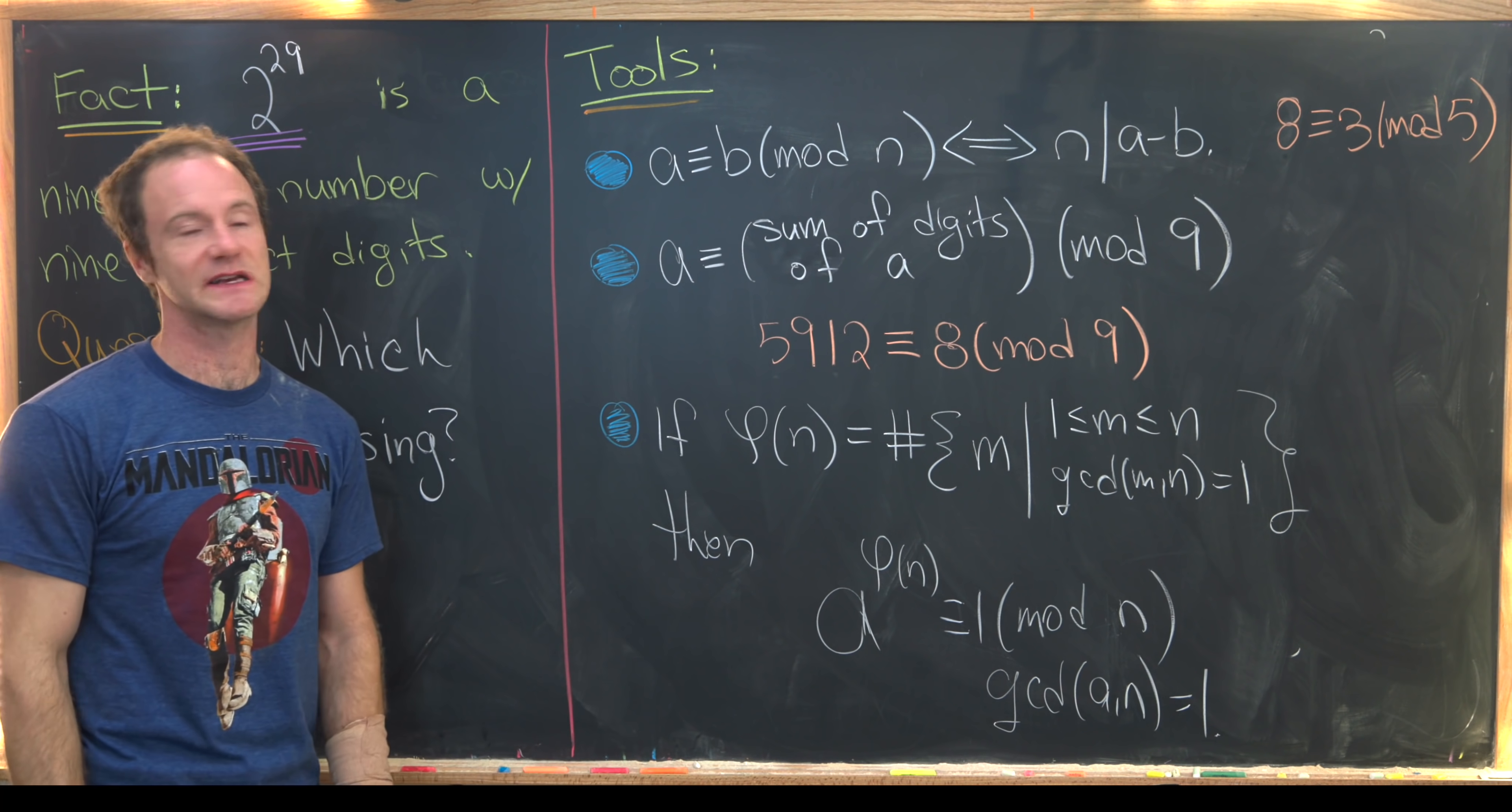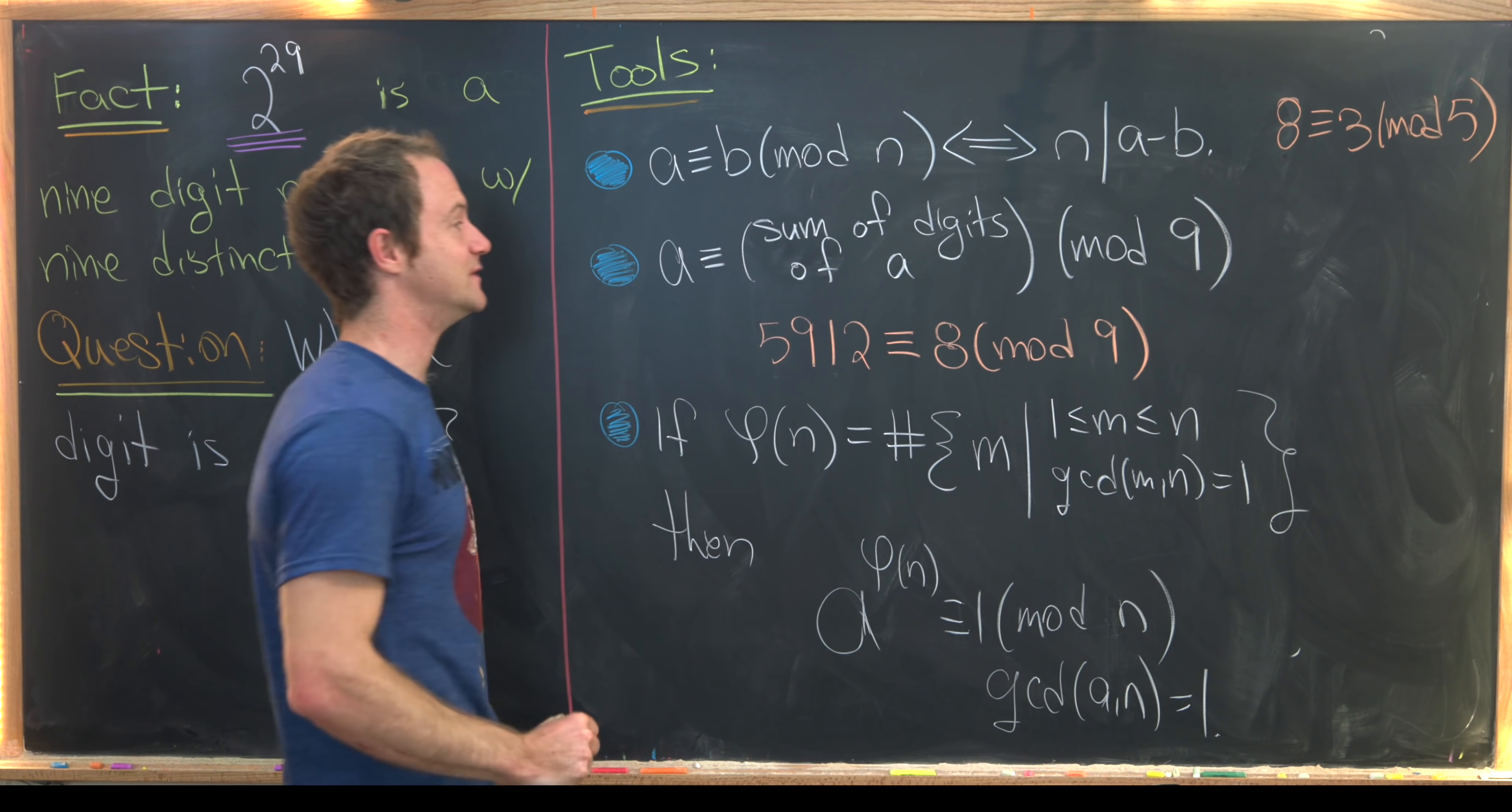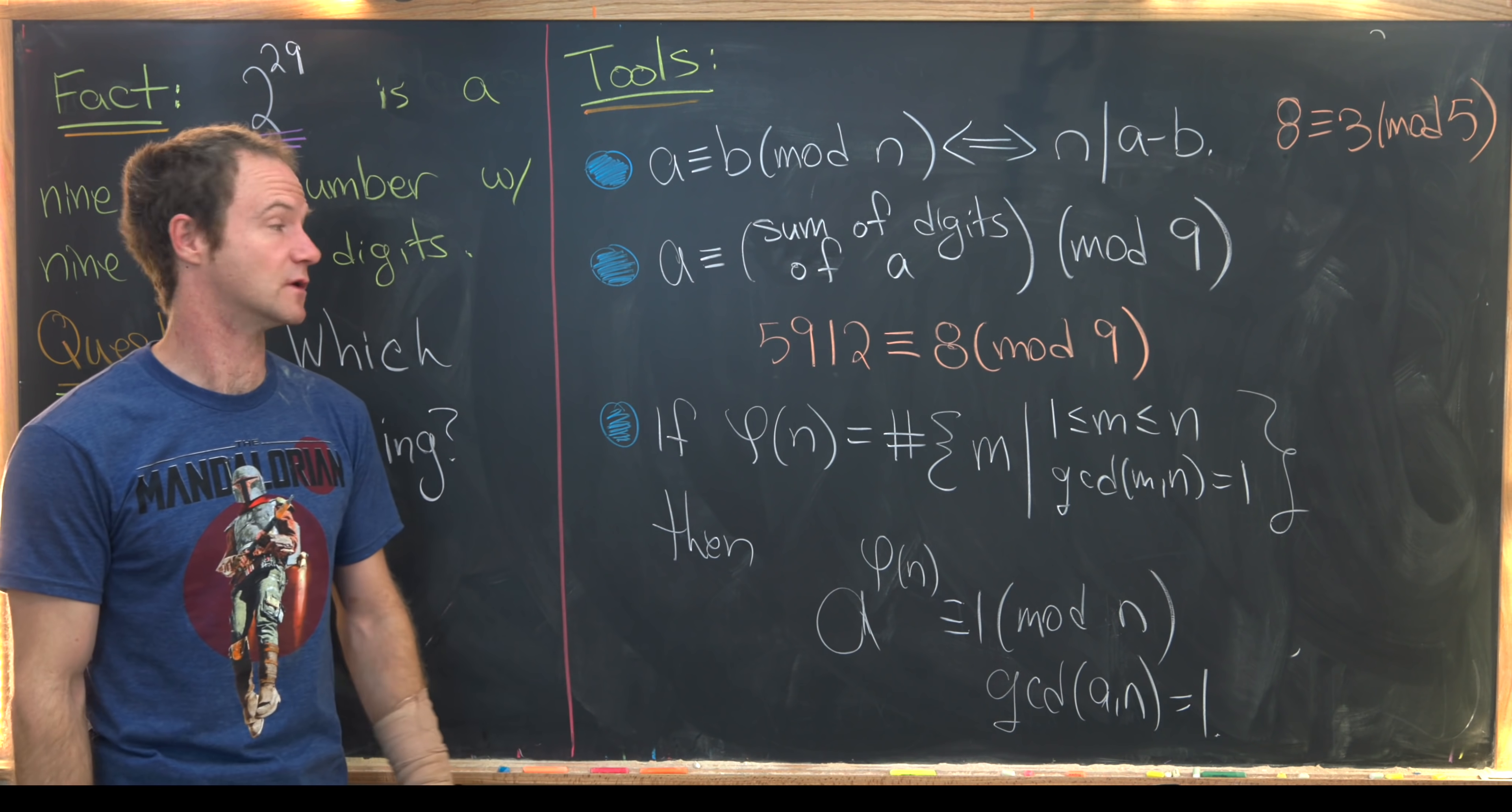So the next is a divisibility test for multiples of nine, but this actually works with congruence modulo nine as well. So a is congruent to the sum of the digits of a modulo nine. So often this is given as a is a multiple of nine if and only if the sum of the digits of a is also a multiple of nine.